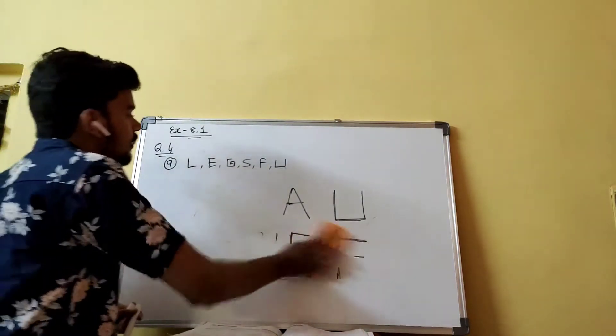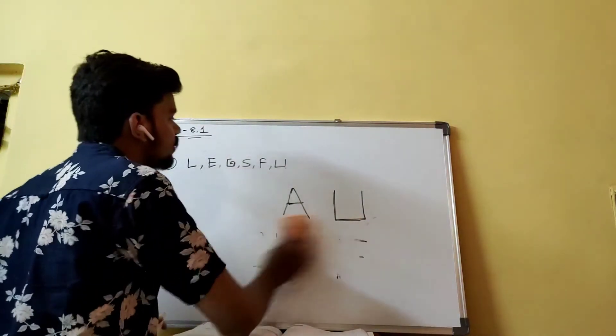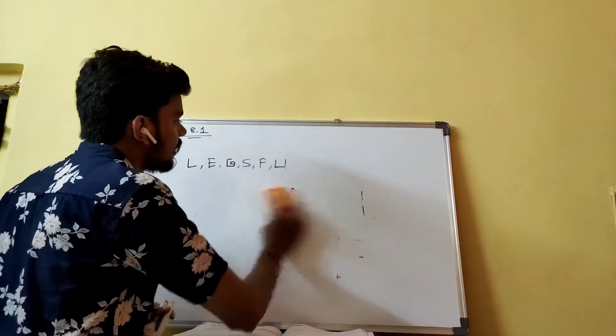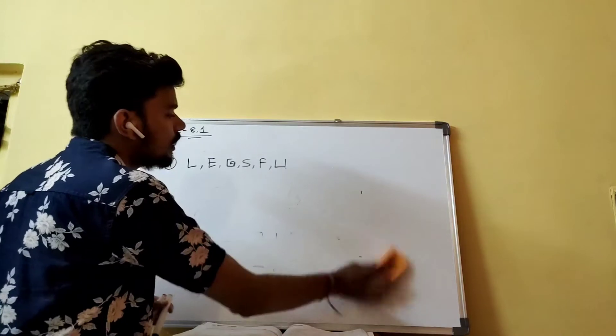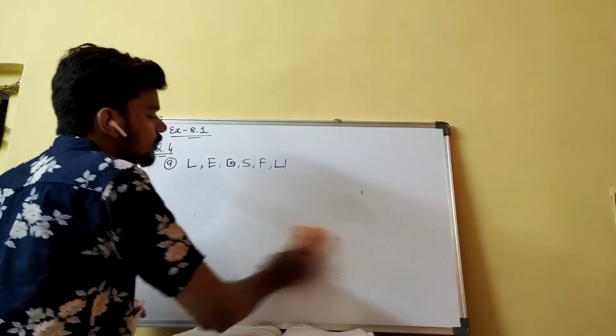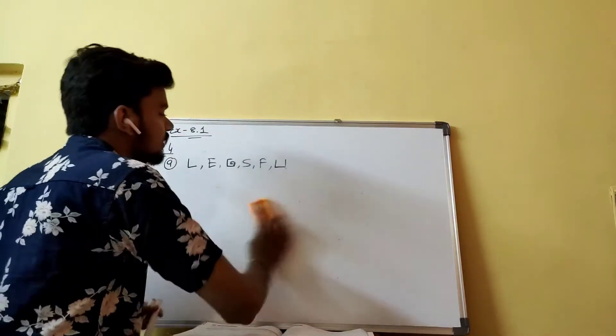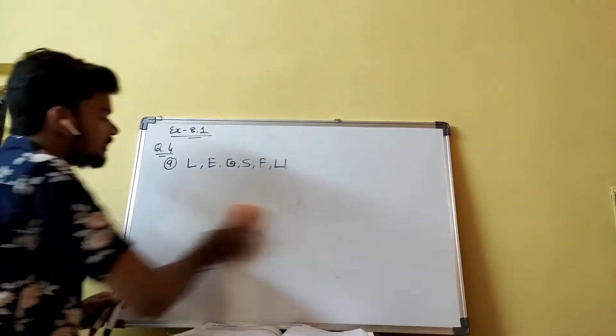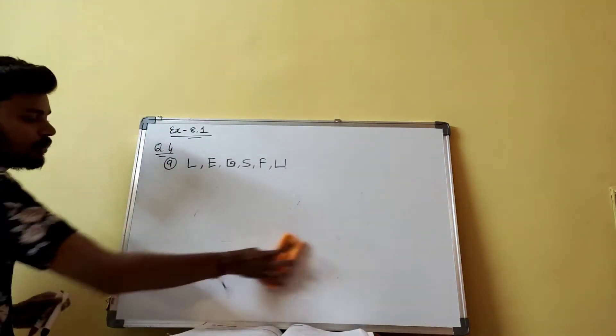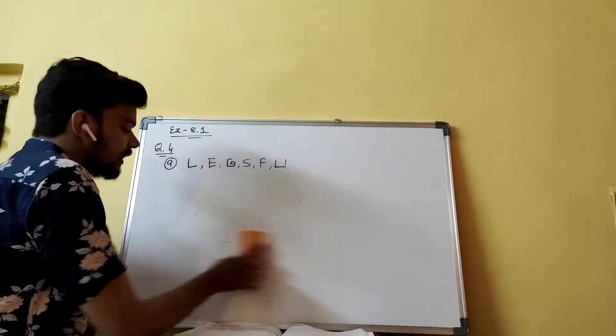So the answer for part (a) is: L, E, G, S, F, and U - these are the letters that have perpendicular lines.